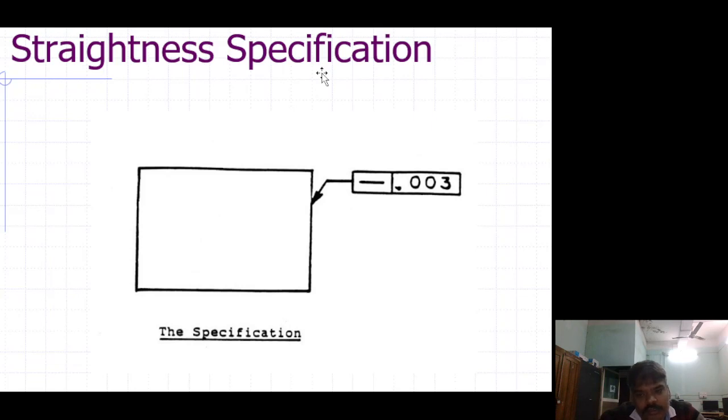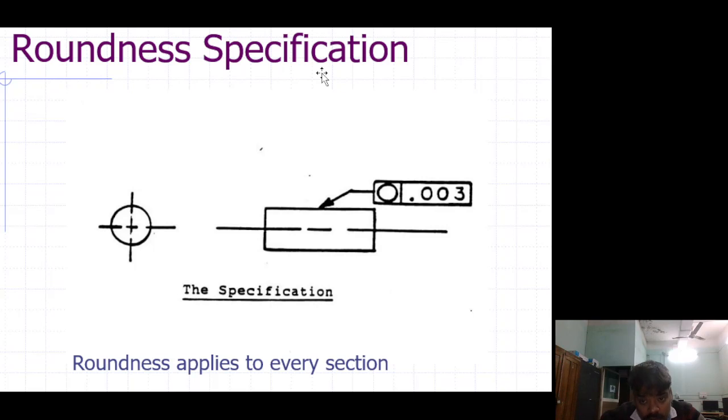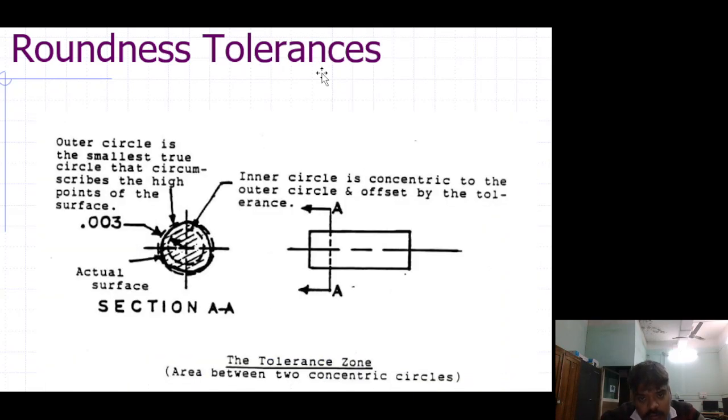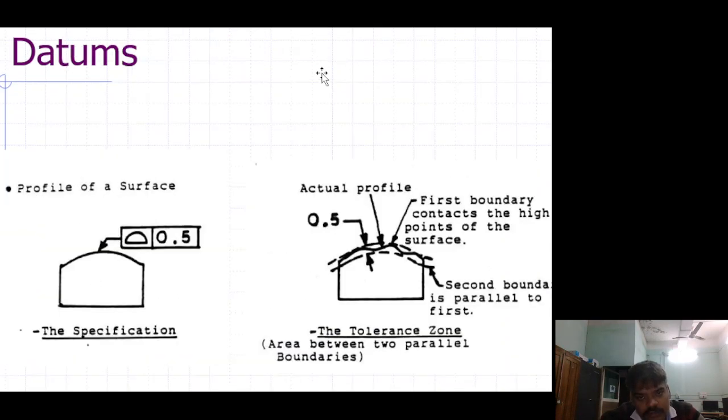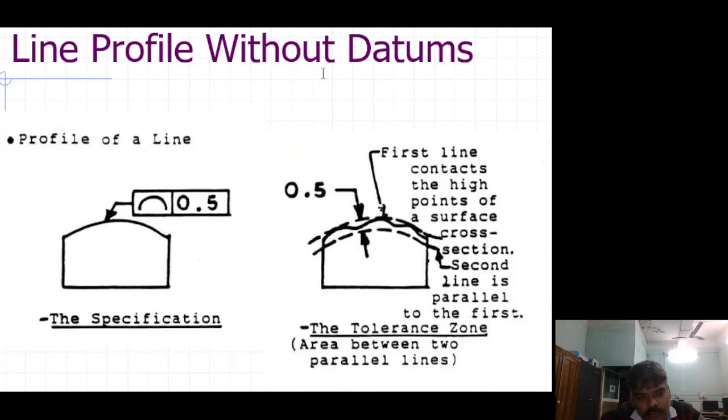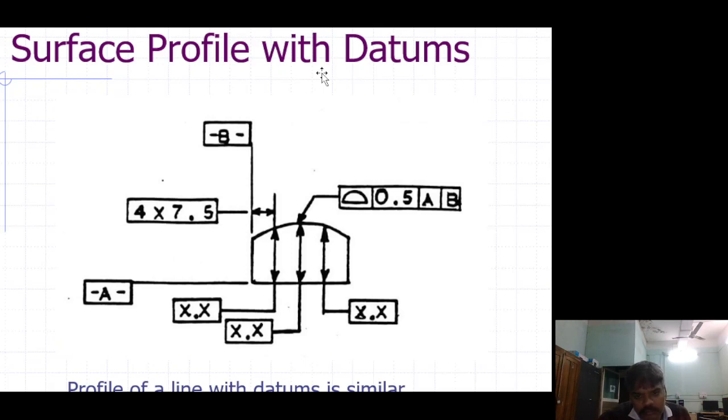Straightness specification, straightness tolerance. Roundness specification, roundness tolerance. Surface profile without datum, line profile without datum, surface profile with datum.